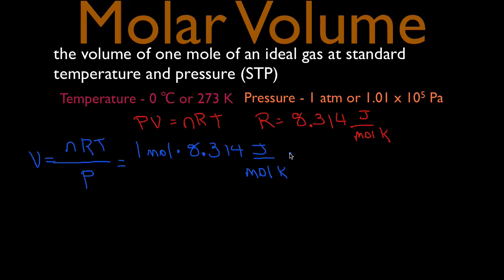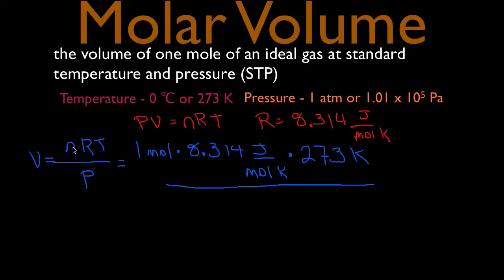We multiply by the gas constant 8.314 joule over mole Kelvin, and the temperature is 273 Kelvin. All of that goes over the pressure, which in this case is 1.01 times 10 to the 5th Pascals. Our moles cancel and our Kelvins cancel, but we have joules and Pascals, and they don't cancel directly.